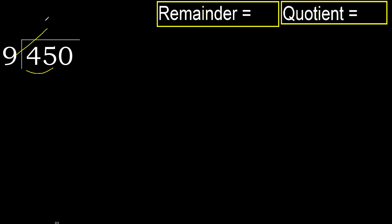9 — multiply by which number is nearest to 45, but not greater. 9 multiplied by 6...